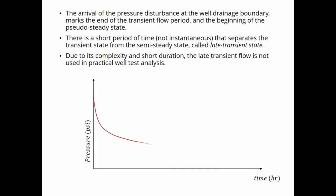The arrival of the pressure disturbance at the well-drainage boundary marks the end of the transient flow period, and the beginning of the pseudo-steady state. There is a short period of time that separates the transient state from the semi-steady state, that is called the late-transient state. Due to its complexity and short duration, the late-transient flow is not used in practical well-test analysis.